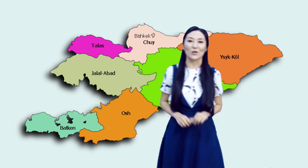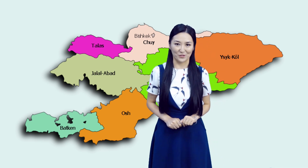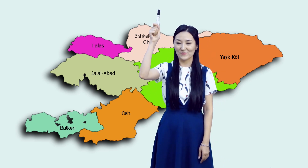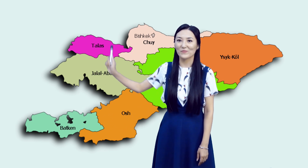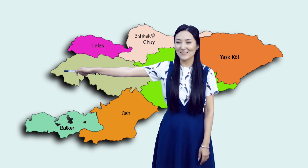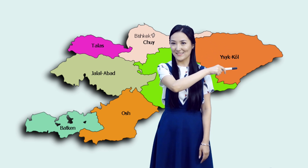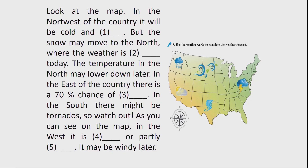Now, look at the map and repeat after me: north, south, west, east. Alright, it's time to do an exercise. Here is another map. You have to look at this map, use the weather words, and complete the weather forecast.